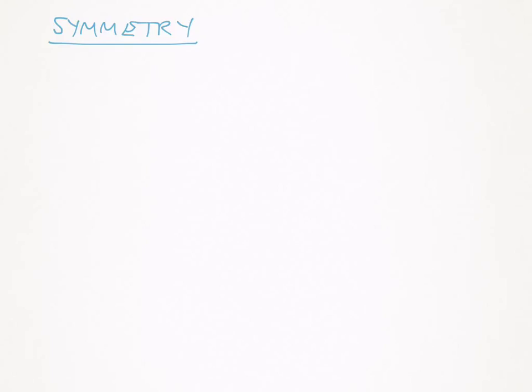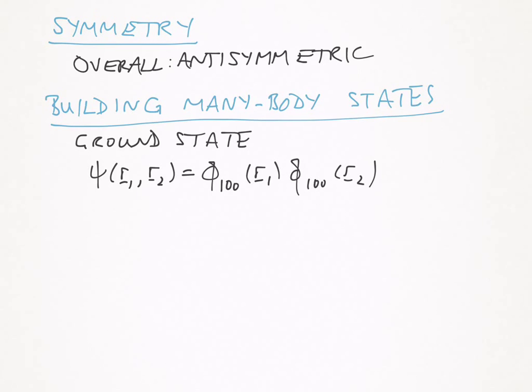Now, if we think about symmetry of the total wave function, overall, the total wave function for the two electrons will have to be antisymmetric, because we're dealing with fermions. We build many-body states by taking products of the single particle wave function. So the spatial part of the ground state is, as I've written it here, it's just the product of the 1s orbitals for the two electrons at different points in space. That has to be antisymmetric overall, so we multiply that symmetric spatial wave function by the antisymmetric singlet spin function.